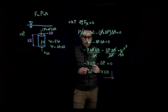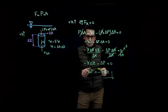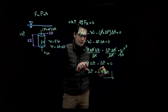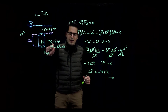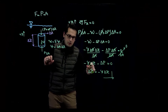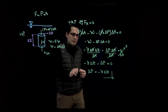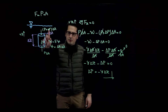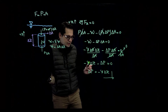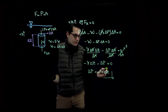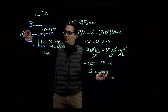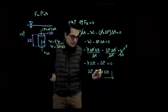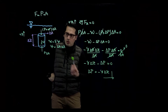This equation tells us that changes in pressure are related to changes in elevation of the fluid. As elevation changes, pressure changes in a correlated way. Specifically, when I go up in a fluid, delta z is positive, and because of the negative sign, pressure decreases as I go up in a fluid.